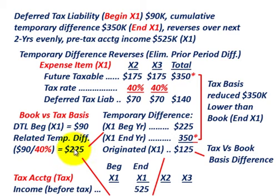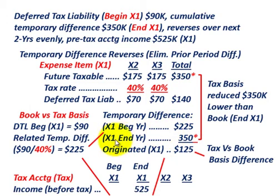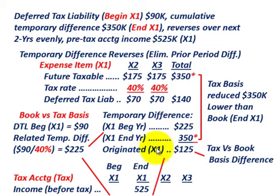Dividing $90,000 by 40% gives us $225,000 — that's the temporary difference at the beginning of the year, which we can think of as a depreciation item. So we start out with the beginning balance temporary difference of $225,000 at the start of year x1. At the end of year x1, we have the cumulative amount of $350,000. The difference between $225,000 and $350,000 represents an increase, and that difference — $125,000 — is the amount originated in year x1.